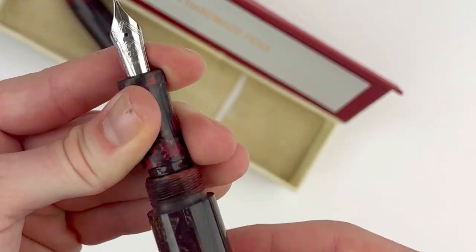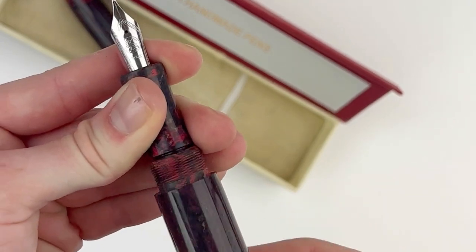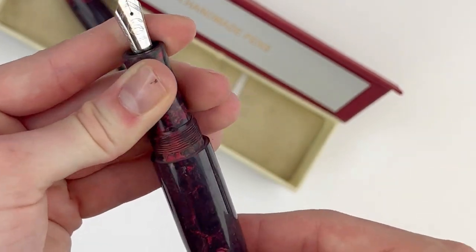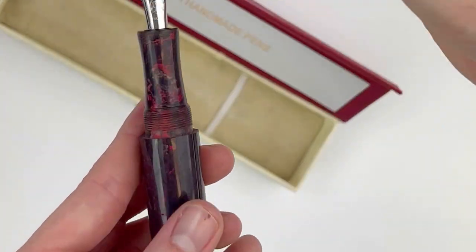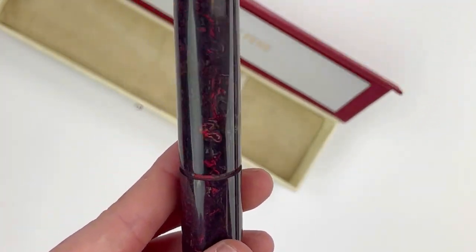The Ranga Giant 9B Fountain Pen measures 7 inches from end to end when capped, and the entire pen, including the barrel, the cap, and the section, are all made of premium ebonite.